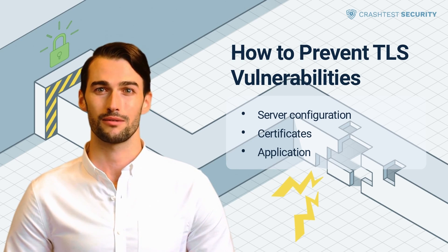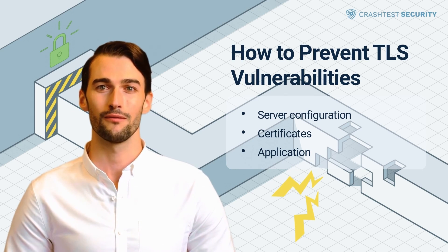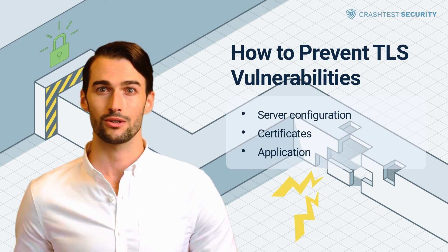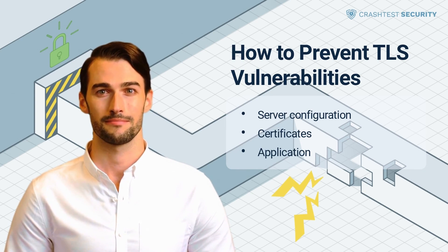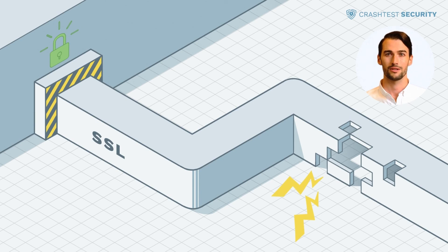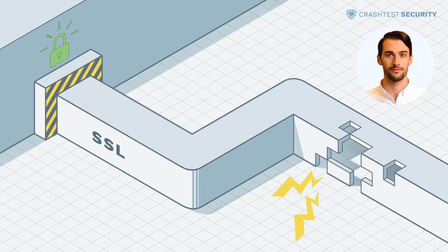To provide a secure way for your users to communicate with your web application, you must enable TLS encryption. You can enable TLS encryption by configuring trusted certificates. Try Crash Test Security today to discover how it integrates into your development stack for efficient, automated vulnerability scanning. The trial is free. Also, subscribe to the Crash Test Security channel to get more information about the most significant web security threats, their prevention, and how to use the Crash Test Security Suite. Thank you for watching and see you in our next video.